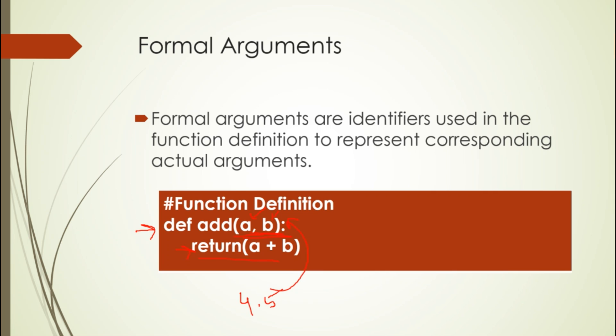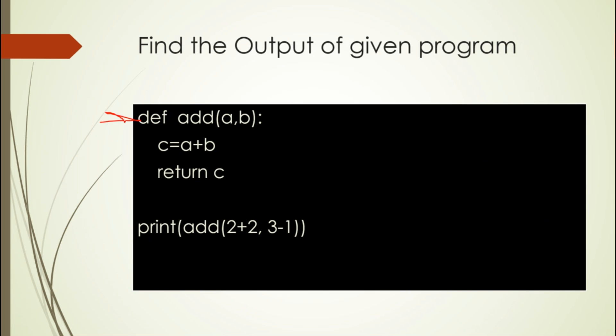Let's see an example. What is the output of this given program? We have def keyword, then add with parameters a comma b—these are the formal parameters. Then c equals a plus b, so we compute c as a plus b, then return c. What we are doing is print add with two plus two and three minus one. The result is: two plus two is four, and three minus one is two. Four goes to a and two goes to b, so it computes four plus two is six. The answer is six, which is returned and printed.